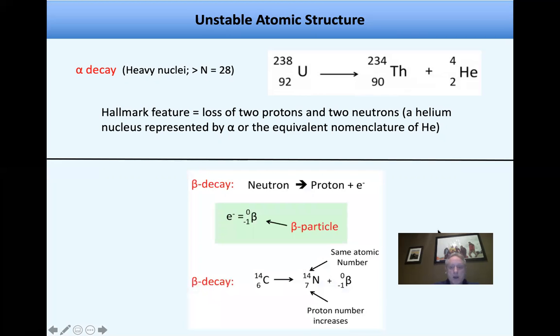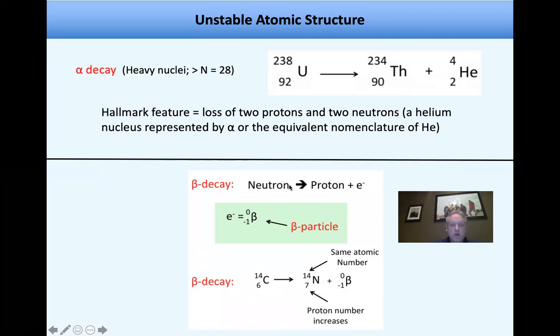So then in beta decay, what happens is a neutron turns into a proton plus an electron. And so a beta particle is basically an electron. And so for beta decay, what happens if you take a look over here at carbon-14, it actually undergoes beta decay. And you have the same atomic number, but the number of protons increases, and you emit your electron.